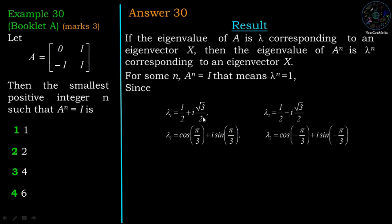So this complex number we write in the exponential form or polar form. Then we have 1 by 2 equal to cos pi by 3, and i times sin pi by 3 equal to root 3 by 2. Similarly, lambda 2 equal to cos minus pi by 3 plus i sin minus pi by 3. So exponential form is e power i times pi by 3, and lambda 2 equal to e power minus i pi by 3.